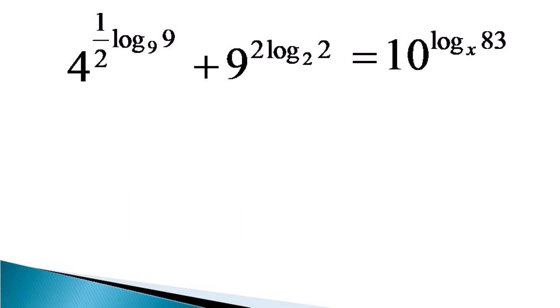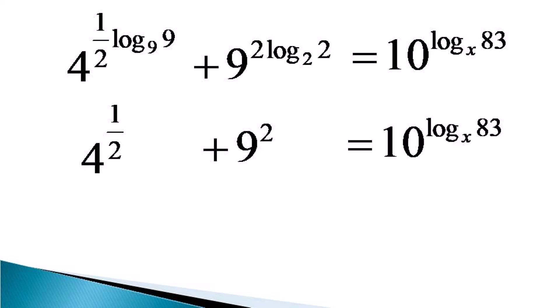Now, log 9 to the base 9 is unity, so the first term on the left hand side becomes 4 raised to the power half. Similarly, log 2 to the base 2 is unity, so the second term becomes 9 squared, and this is obviously equal to the right hand side: 10 raised to the power log 83 to the base x.